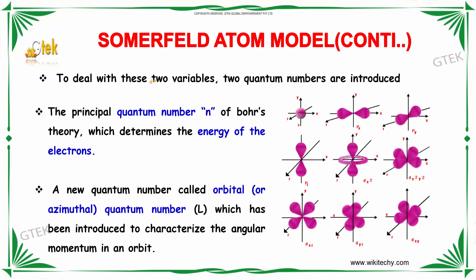You are able to see the s-orbital sphere. This one is px, py, pz. It's dx square, dx square y square, dxz. Here dyz and dxy.